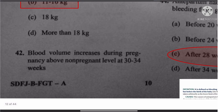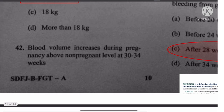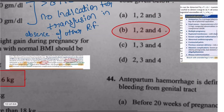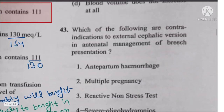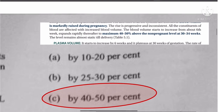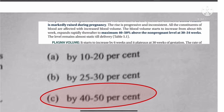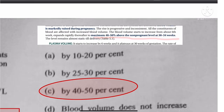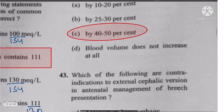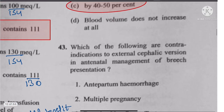Question 42: Blood volume increases during pregnancy. The statement directly from Datta is that blood volume starts to increase from about 6 weeks, reaching a maximum of 40 to 50 percent above the non-pregnant level at 30 to 34 weeks. The answer is 40 to 50 percent.